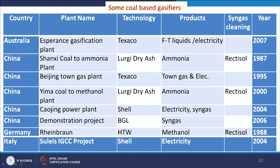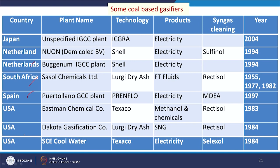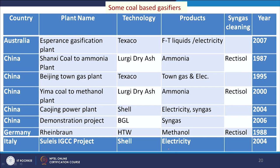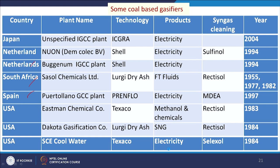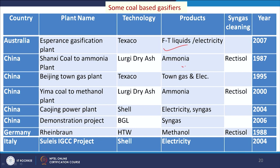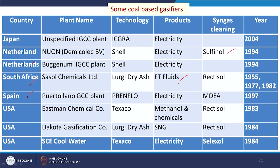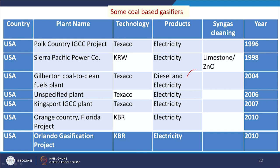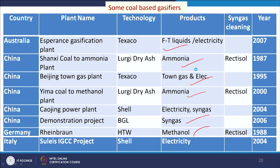Coal-based gasifiers around the world are located in China, Germany, Italy, Netherlands, South Africa, Spain, and the USA. These plants produce various products: FT fluids, electricity, ammonia, town gas, syngas, methanol, SNG, diesel, and chemicals. Different gas cleaning options are also employed, such as Rectisol, Sulfinol, and MDA. This topic will be continued in the next class.